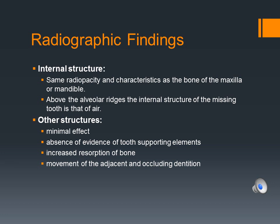The internal structure of a missing tooth presents the same radiopaque characteristics as the bone of the maxilla or mandible, unless a neighboring tooth has migrated to occupy the open space. Above the alveolar ridges, the internal structure of the missing tooth area is that of air, unless an adjacent tooth has migrated into the vacant position.